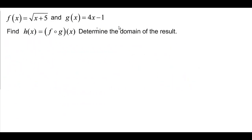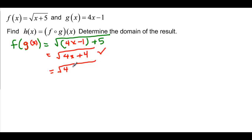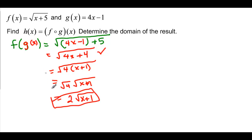We want to find f of g of x and determine the domain, where f of x equals the square root of x plus 5, and g of x equals 4x minus 1. Inside the f function we put g of x, so instead of x we have 4x minus 1. That gives us the square root of 4x plus 4. The textbook would factor out the common factor of 4 to get the square root of 4 times x plus 1, which separates into 2 times the square root of x plus 1. Either form works.